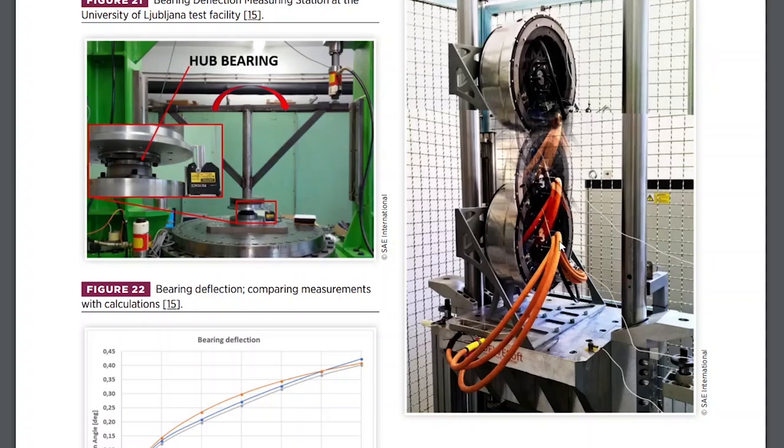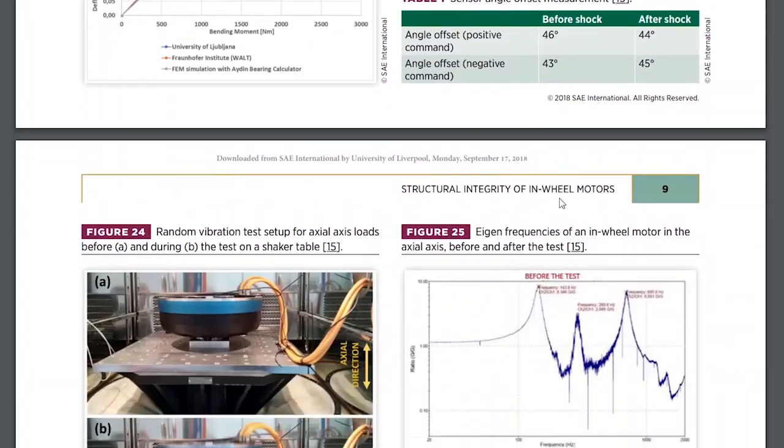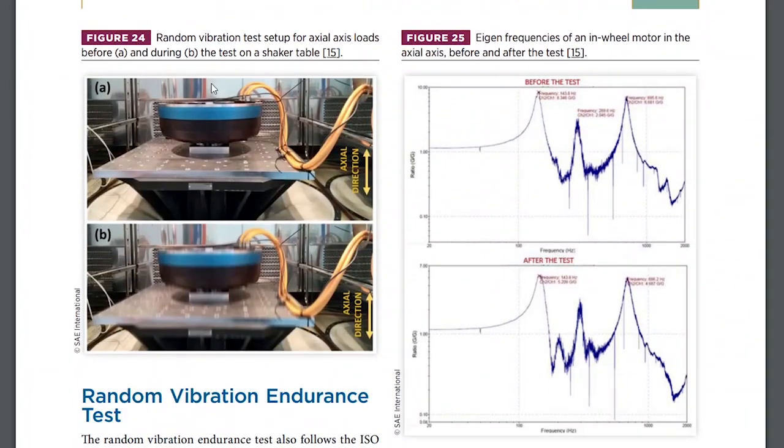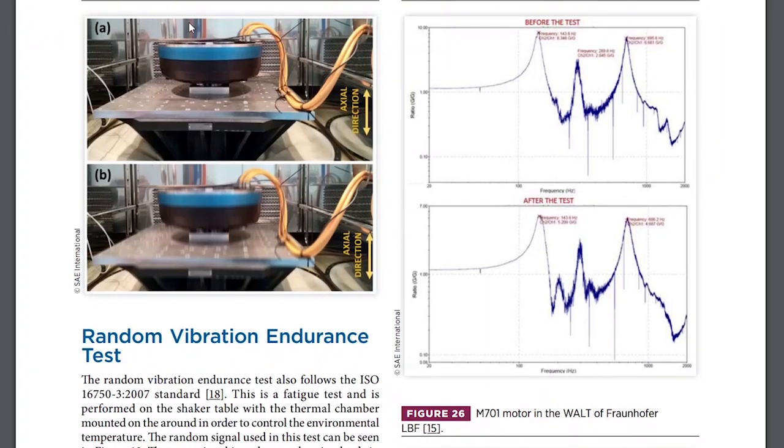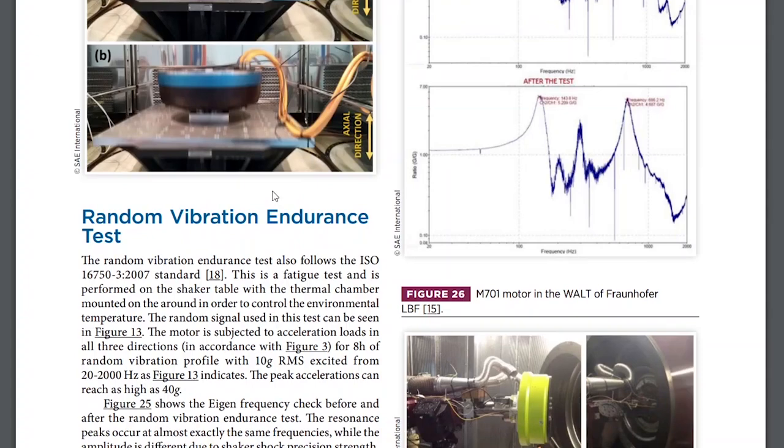This is the shock test. They dropped this thing. It's 100 G's of shock. This is a random vibration test, and it just vibrates it randomly. This basically subjects the motor in a short period of time to what the lifespan of a car wheel would take on.